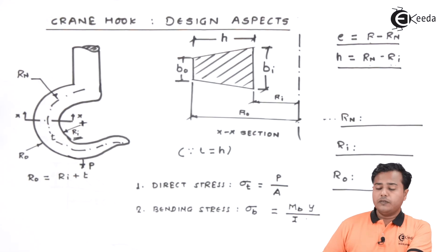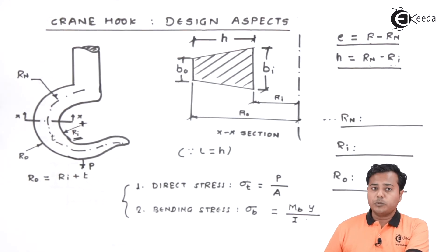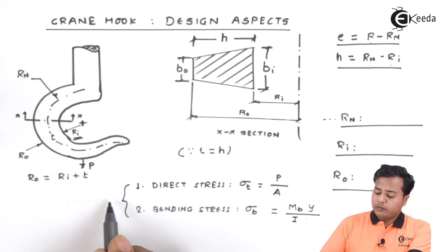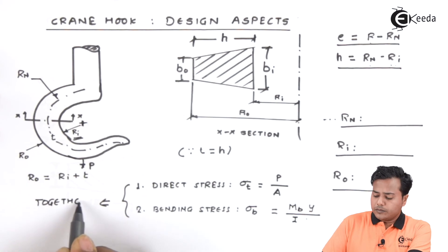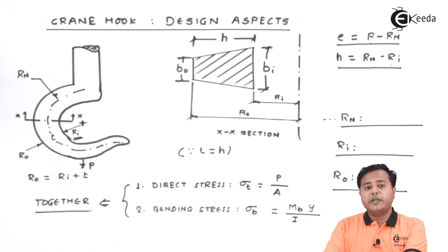So with this we are going to take their summation, interpolation or superposition we are going to have so they will be added together. And based on this we are going to design the crane hooks.